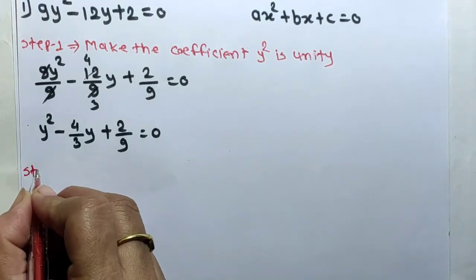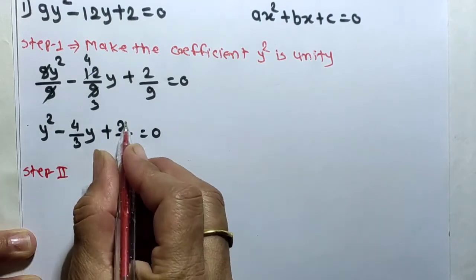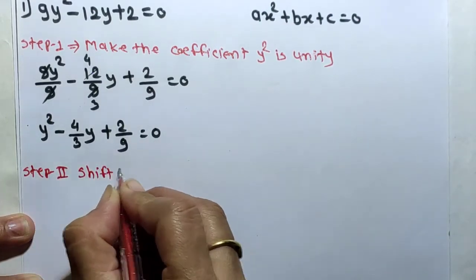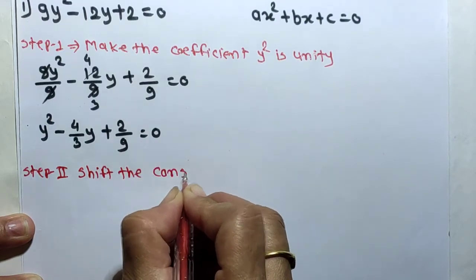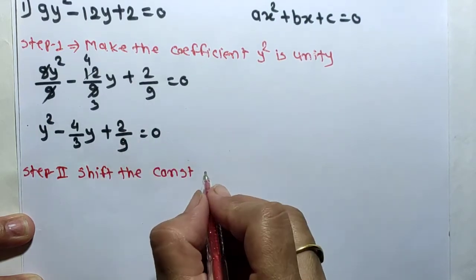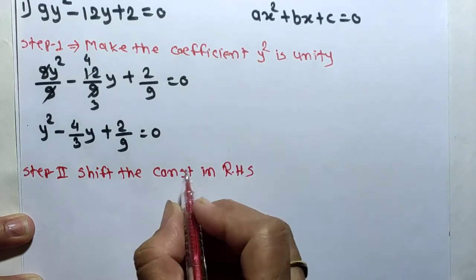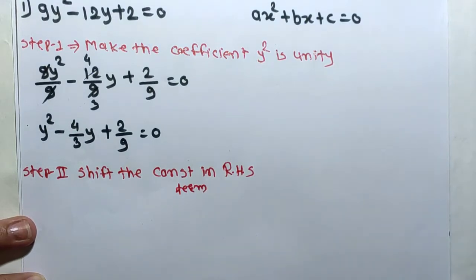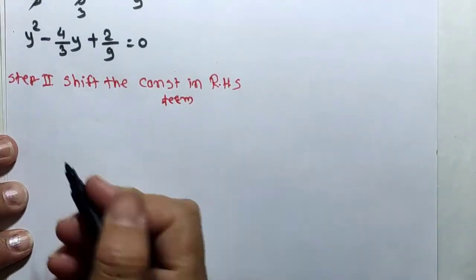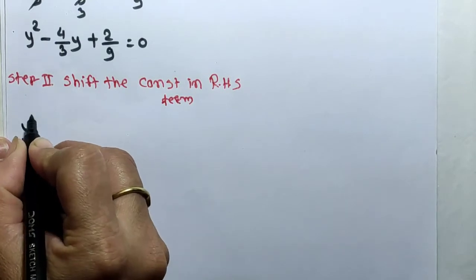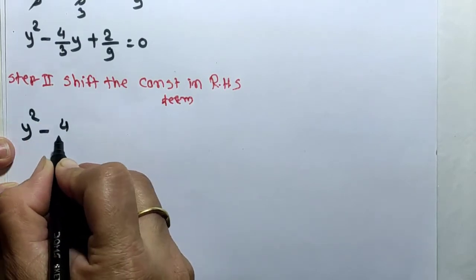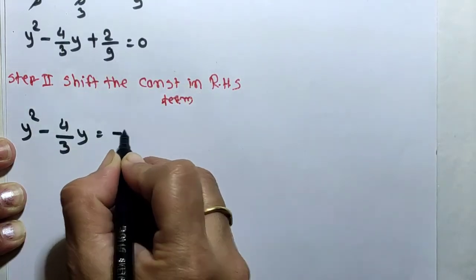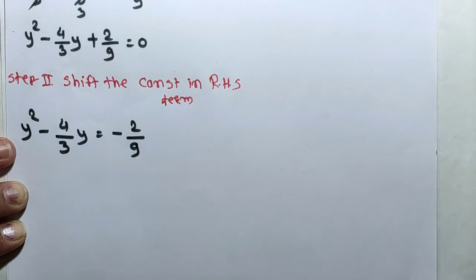In the second step, we shift the constant term to the right-hand side. The constant term is 2/9. Shifting it to the RHS gives: y² minus 4/3·y equals minus 2/9.